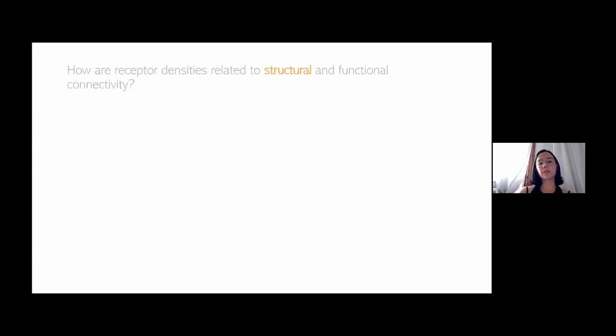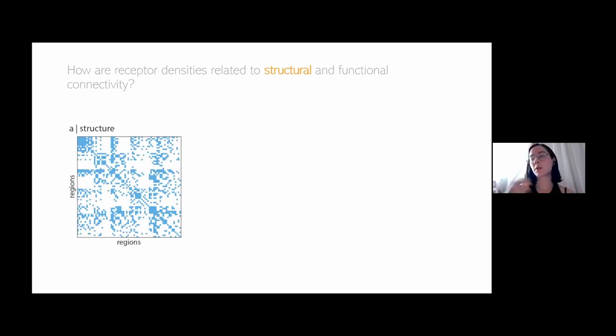How are receptor densities related to structural and functional connectivity? I'll start with structure. We're looking at the structural connectome. That's coming from diffusion-weighted MRI, just an estimate of whether two brain regions are physically connected. Then I'm comparing this to that receptor similarity matrix, the correlation between the receptor fingerprints of every pair of brain regions.